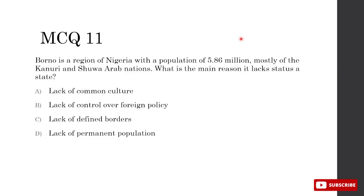Borno is a region of Nigeria with a population of 5.86 million. What is the main reason it lacks status as a state? We look for which characteristic of a state it doesn't have. Common culture is not required to be a state — Nigeria itself has many nations with varied cultures. So rule out A. B — lack of control over foreign policy — regional governments can't control foreign policy; only federal governments do. C — defined borders — it has those as a region. D — lack of permanent population — it has 5.86 million people. So B is correct.